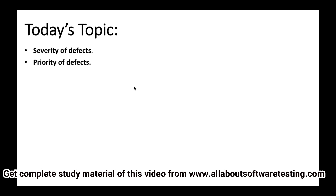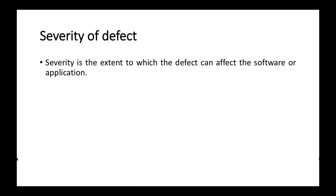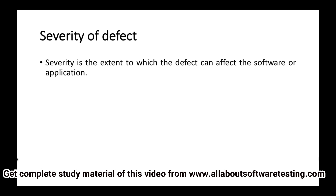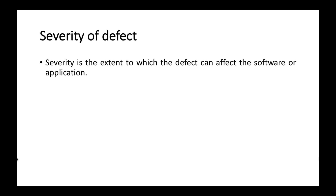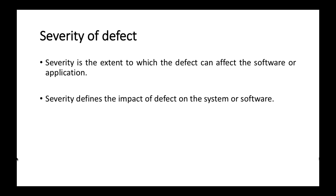We will study each of these topics in detail. The first one is severity of defects and the second one is priority of defects. Severity is the extent to which a defect can affect the software or an application — it defines the impact of the defect on the system. If the defect is of high severity, it will have more effect on the system compared to a defect of low severity.